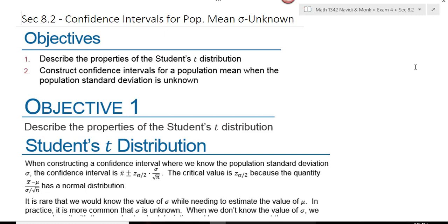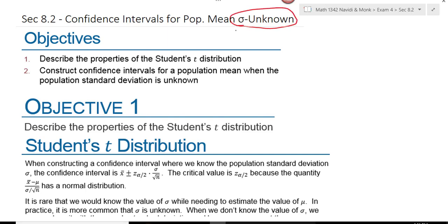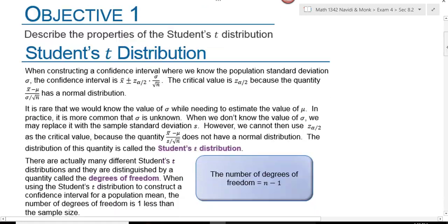In section 8.2, we're going to be looking for confidence intervals for a population mean, only now the population standard deviation is unknown. There are only two objectives here: to describe the properties of the student t-distribution and then construct confidence intervals for a population mean when the population standard deviation is unknown.